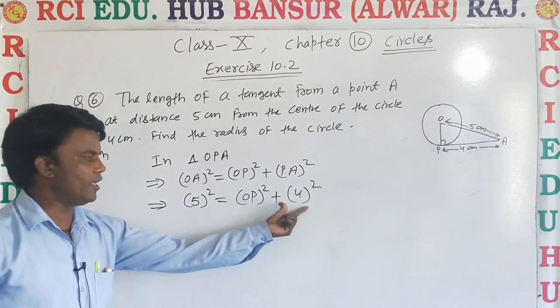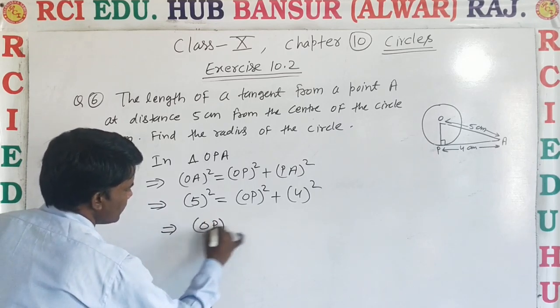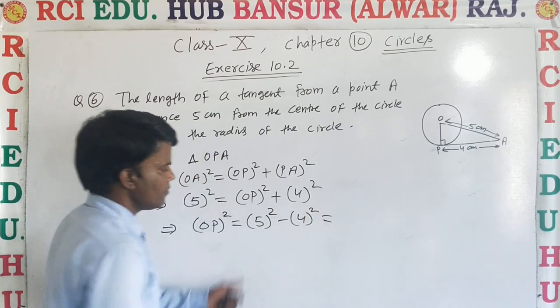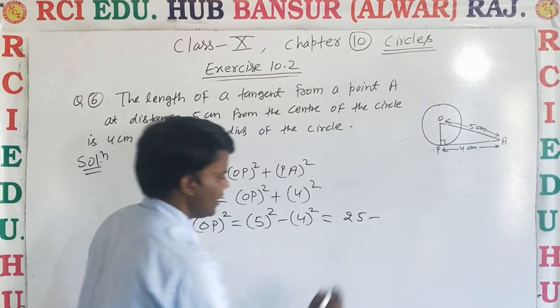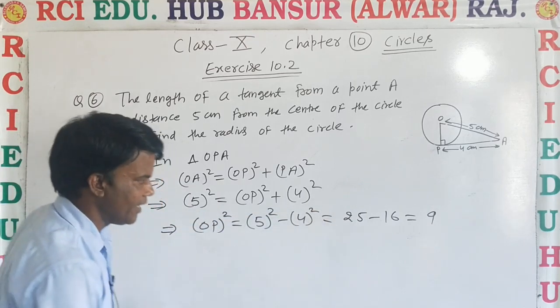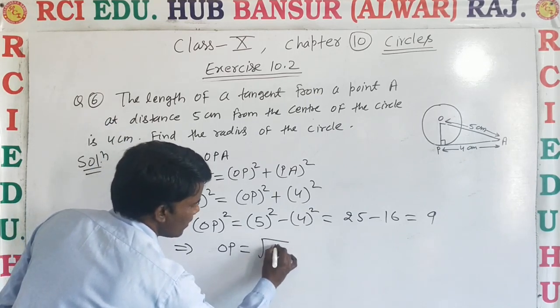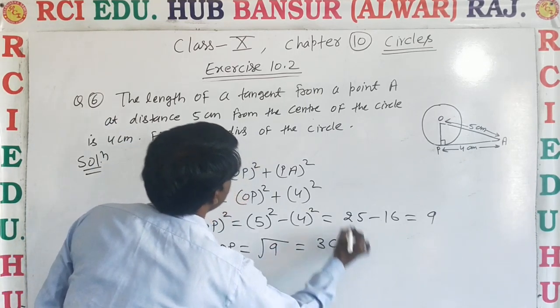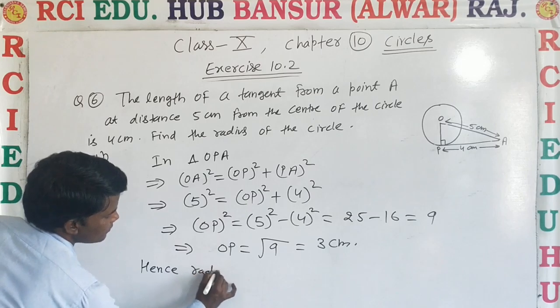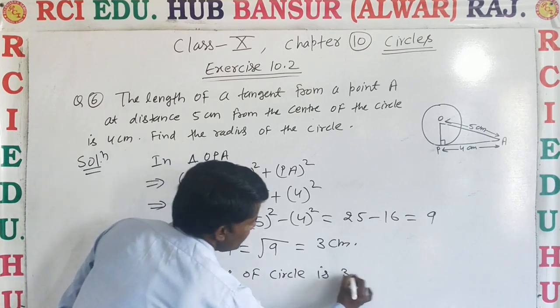Plus ke 4 square ko transpose karenge to minus ho jayega. That means OP square is equal to 5 square minus 4 square. 5 square is 25, and 4 ka square is 16. 25 me se 16 minus karenge to 9. Aur square ko transpose karenge to square root me change ho jata hai. Then OP equal to root 9, it means 3 cm. Hence, radius of circle is 3 cm.